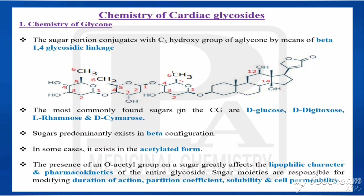To summarize the glycone: glycones are sugars — D-glucose, D-digitoxose, L-rhamnose, and D-cymarose — connected with the aglycone by beta 1,4 glycosidic linkage. Some exist in acetylated form, and the O-acetyl group affects the lipophilic character and pharmacokinetics of the entire glycoside. The sugar is responsible for solubility, distribution, duration of action, and cell permeability.